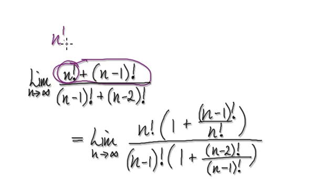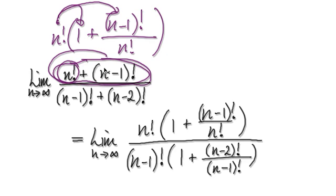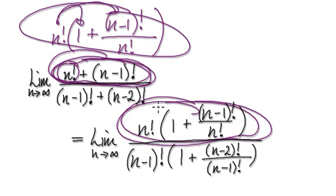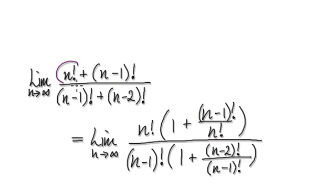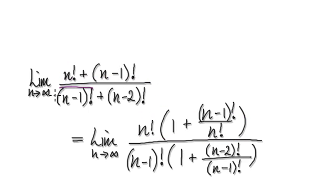Rewrite the numerator as n factorial times 1, plus n minus 1 factorial over n factorial. Now if you multiply these together, it will give you the original expression. So rewrite the numerator as this — factorize out n factorial, and that will give you this. Basically this times this, the whole thing is exactly the same. Use the same technique for the denominator.